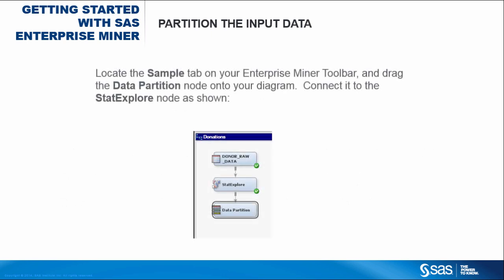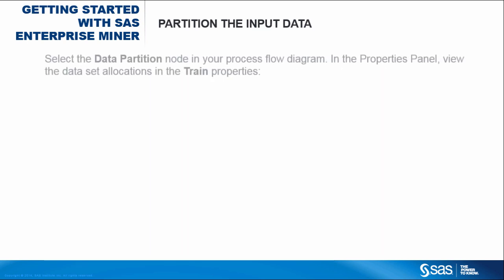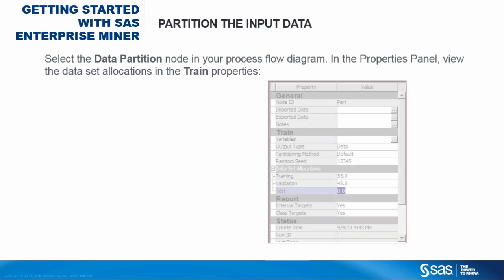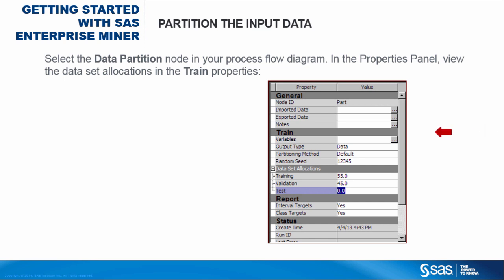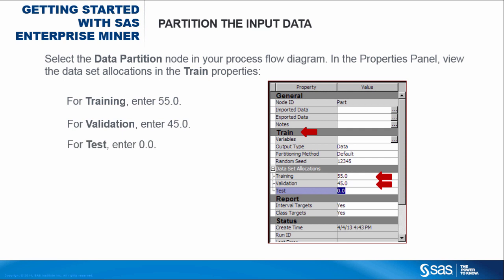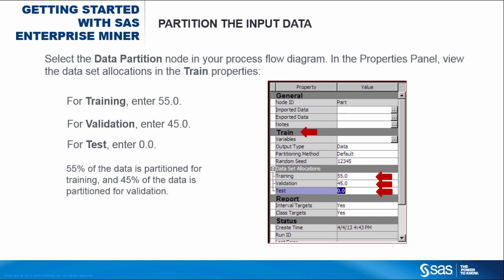Locate the Sample tab on your Enterprise Miner toolbar and drag the Data Partition node onto your diagram, then connect it to the StatExplore node as shown. Select the Data Partition node in your Process Flow diagram. In the Properties panel, view the data set allocations in the Train properties. For Training, enter 55.0. For Validation, enter 45.0. For Test, enter 0.0. 55% of the data is partitioned for training and 45% for validation.